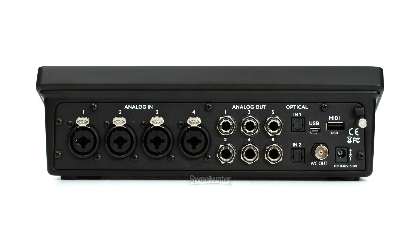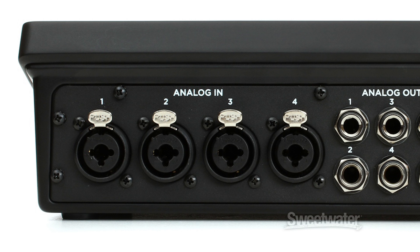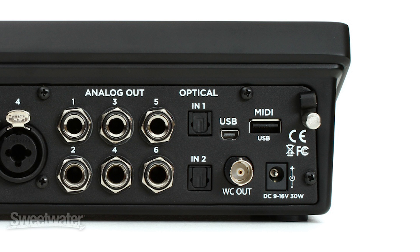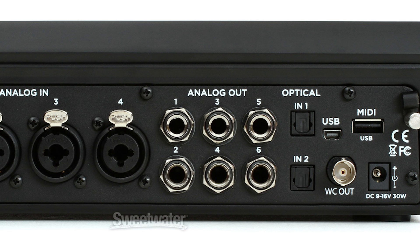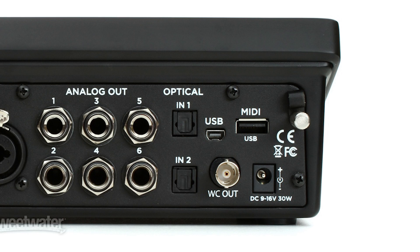The Pro Tools Quartet is a 12-in, 8-out interface. It's 24-bit and up to 192 kHz sample rate. The four inputs are selectable between mic, line, and instrument, plus you have eight optical inputs that are also S-Mux compatible, for a total of 12 inputs. There are also six analog outputs that can be used for either three separate stereo outputs with monitor control support, or as a 5.1 surround interface. Additionally, the word clock output allows you to use the legendary Apogee clock to control your other digital devices.